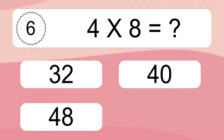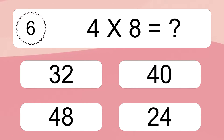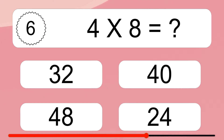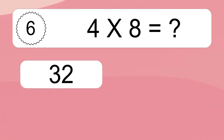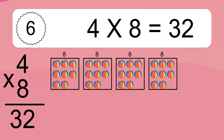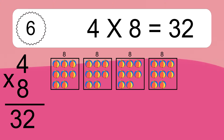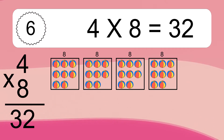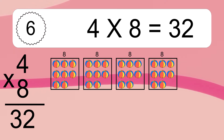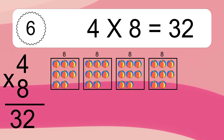Four times eight equals what? Four times eight equals thirty-two. We have four boxes, and each box has eight colorful balls inside. If you count all the balls in all the boxes together, you will have four times eight balls. This equals thirty-two balls.